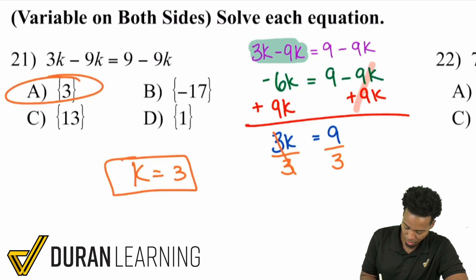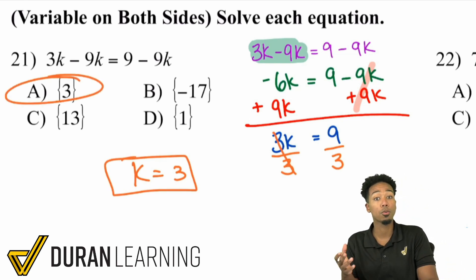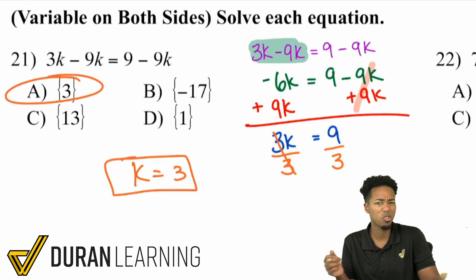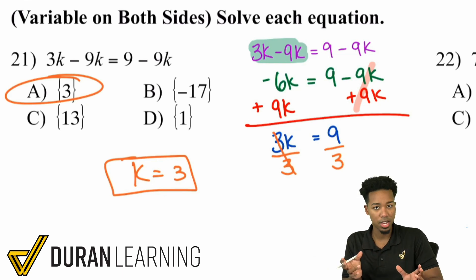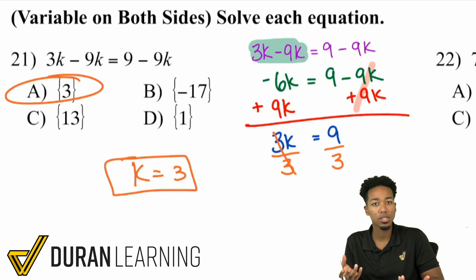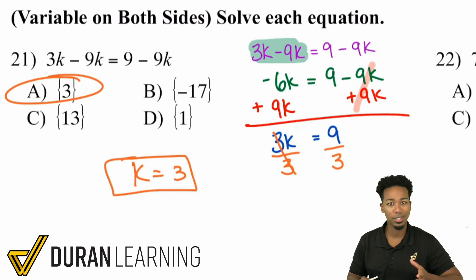And there we are. I'm going to walk you through just a few more problems here, maybe 4 to 6 more. And we're going to go ahead and understand that when we have variables on both sides, we're just going to do the same thing to both sides to kind of move things around. That's the key here.